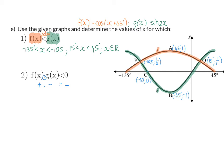This means we need to go and have a look at x values, where the one graph is positive, meaning above the x-axis, and the other one is negative, or below the x-axis.